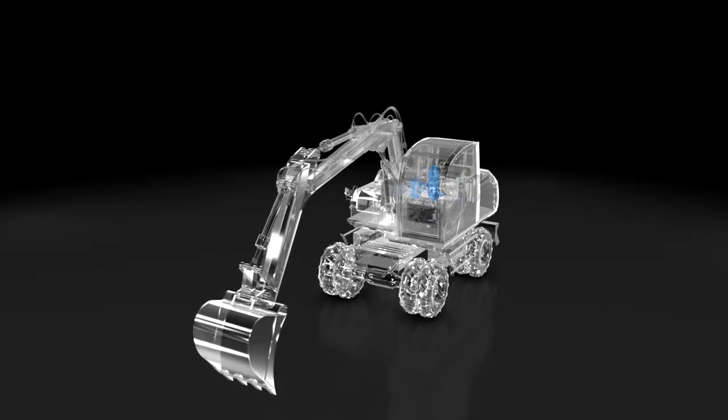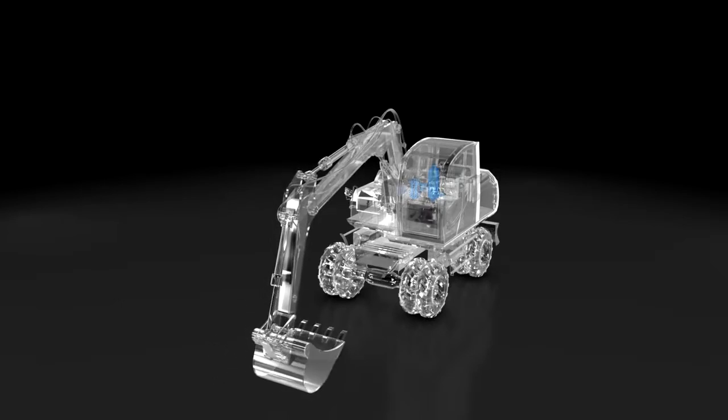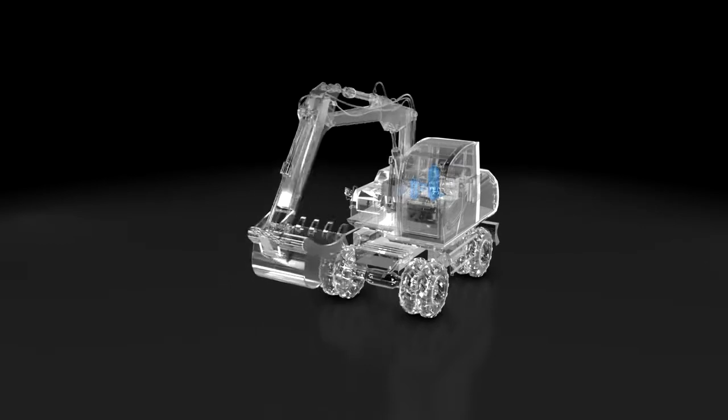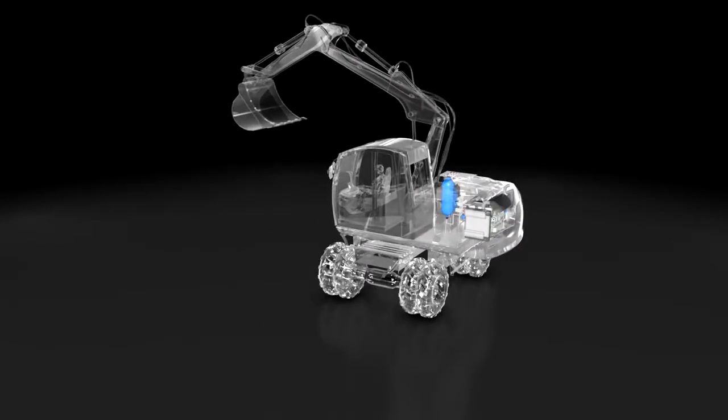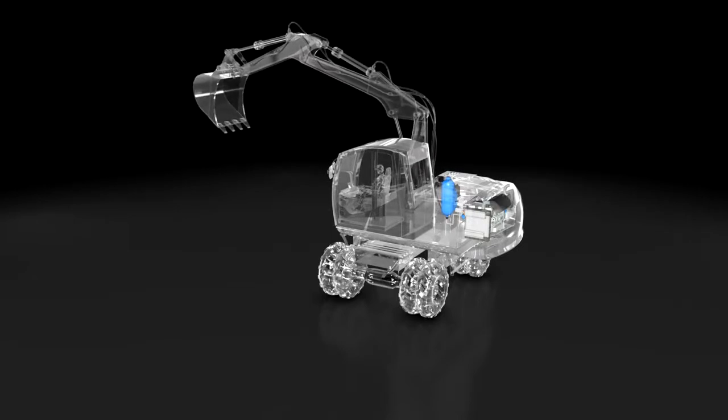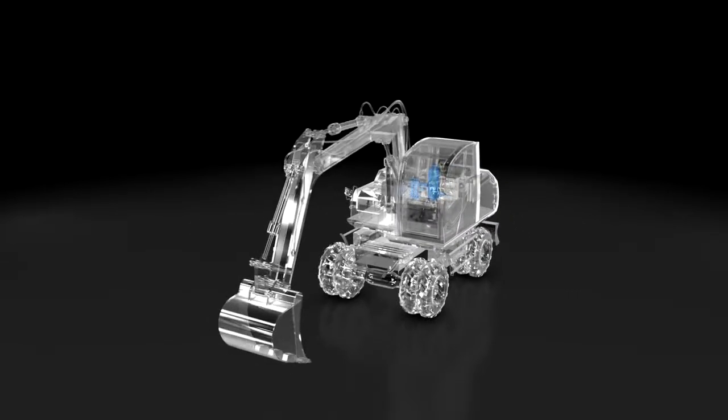We will now take a look at the typical work cycle of an excavator. The digging depth is approximately 2 meters. The filled bucket is raised while at the same time the upper structure turns. After approximately 90 degrees, the bucket is emptied above the truck. It then returns to the starting position and the cycle begins all over again.